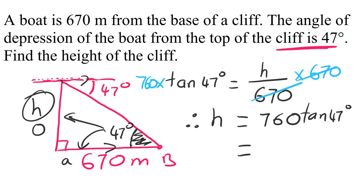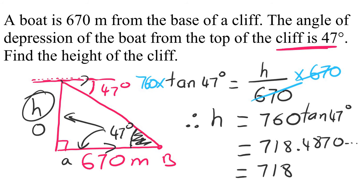Put that into your calculator and you get 718.4870... To one decimal place, look at the digit after the first decimal: it's 8, which is five or more, so we round up — giving 718.5 meters. Therefore the height of the cliff is 718.5 meters.